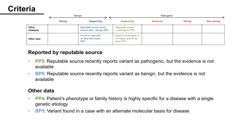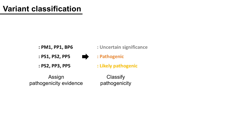Next, Reputable Sources: PP5 can be assigned when a reputable source recently reports a variant as pathogenic, but the evidence is not available. BP6 can be assigned when a reputable source recently reports a variant as benign, but the evidence is not available. Next, Other Data: PP4 when the patient's phenotype or family history is highly specific for a disease with a single genetic etiology. BP5 when a variant is found in a case with an alternate molecular basis for disease.